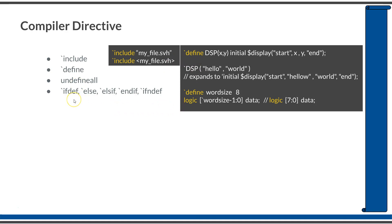The next set of compiler directives are `ifdef, `else, `elsif, and `endif. These are conditional compilation macros, which can be quite useful especially when you are sharing files across different units.